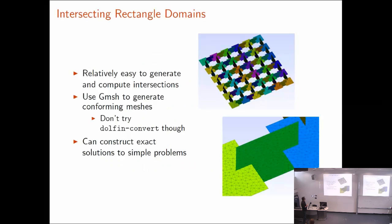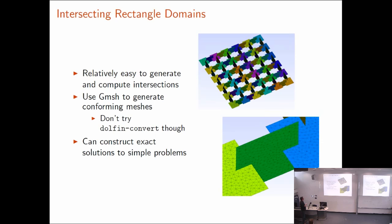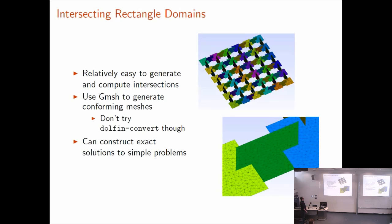I wanted to include a slide on these intersecting rectangle domains because they're important for the application I'm working on — and there's also a little plug for Gmesh here. The Gmesh developers were very helpful in getting the meshing working on these domains. The only disadvantage is: don't try dolfin-convert on a Gmesh mesh generated this way, because it doesn't work — it squishes out one dimension. In our project we've written a separate Gmesh-to-Dolfin converter that circumvents that.